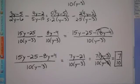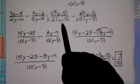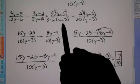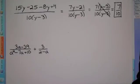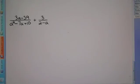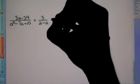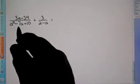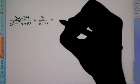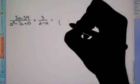That is how you do a problem when you have a variable on top. Now comes the hardest one of all — what happens when the variable expressions in the denominators are different? We're going to do this problem now.